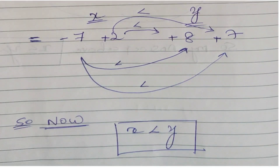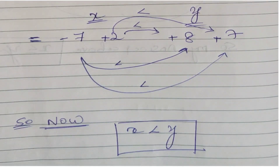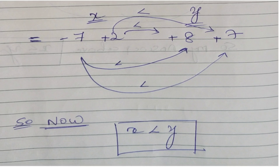So my answer is now y is greater than x. The first time I got y greater than or equal to x, and the second time — using the correct method — I got y greater than x. Understand this logic first, then practice as many quadratic equation examples as possible. If anyone wants to prove me wrong, solve the same type of question and message me in the comment column.